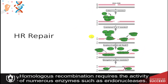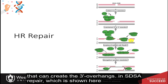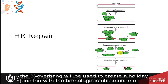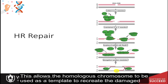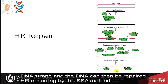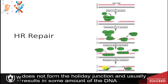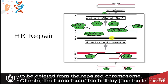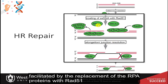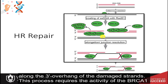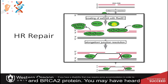Homologous recombination requires the activity of numerous enzymes, such as endonucleases, that can create the 3' overhangs. In SDSA repair, the 3' overhang is used to create the Holliday junction with the homologous chromosome, allowing it to serve as a template to recreate the damaged DNA strand. Homologous recombination by the SSA method does not form the Holliday junction and usually results in some amount of DNA being deleted. The formation of the Holliday junction is facilitated by the replacement of RPA proteins with RAD51 along the 3' overhang, a process that requires the activity of BRCA1 and BRCA2.